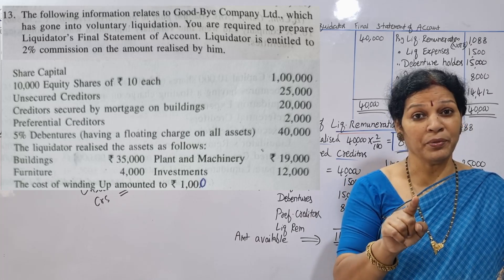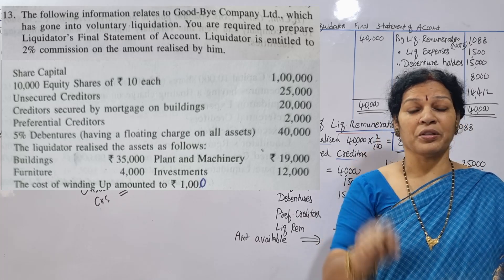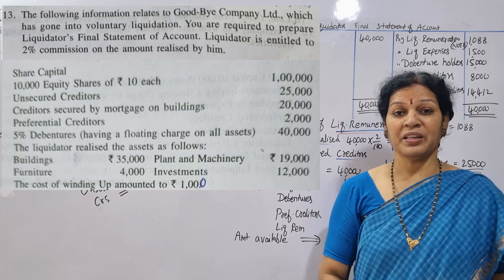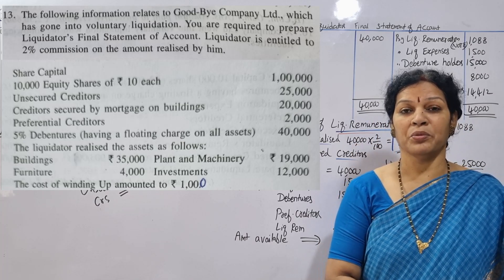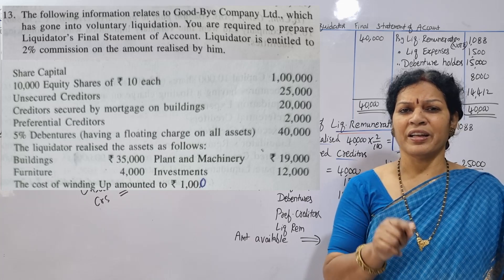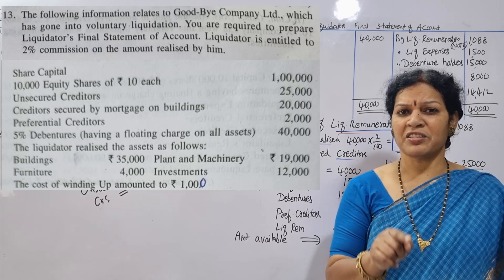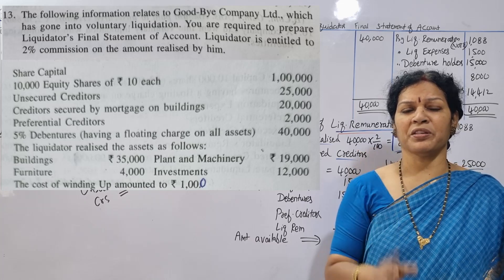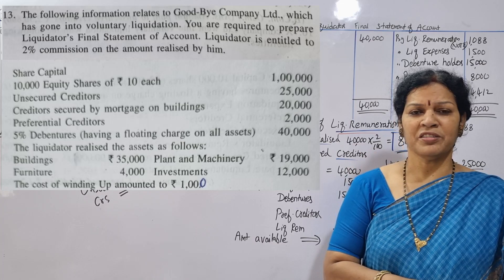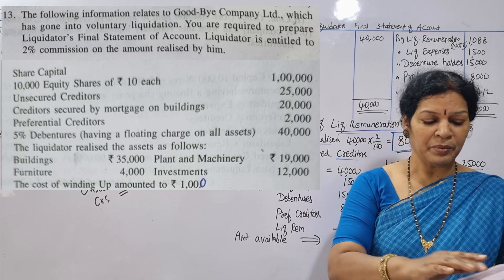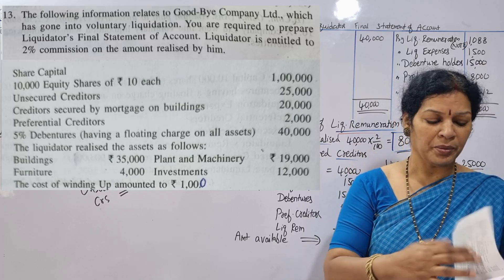Only 2% of the assets are going to be affected — not the unsecured creditors. Is it very easy? What is the problem?